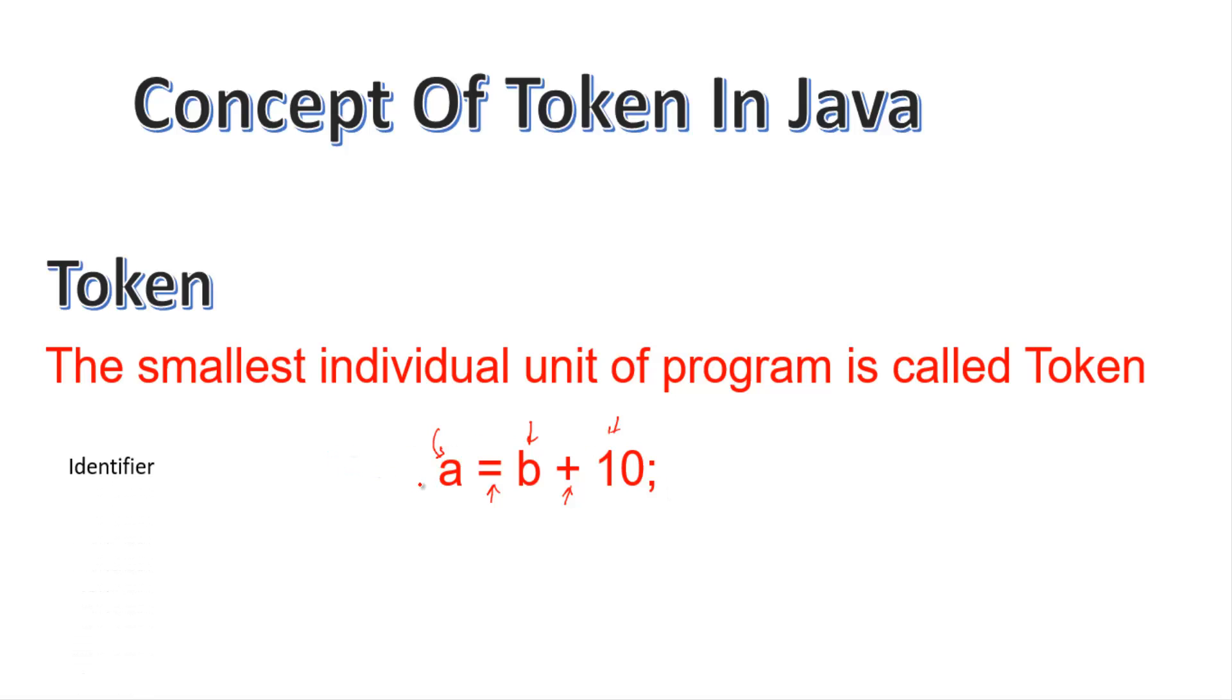Now this is an identifier. Here we have the first identifier. This is an identifier. And here what you're seeing, this is called the assignment.